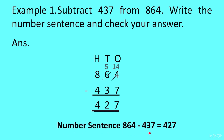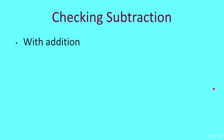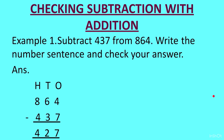In this question we also had to write the number sentence. So in number sentence form it will be: 864 minus 437 is equal to 427. Now checking can be done in 2 ways — the first with addition and second with subtraction.